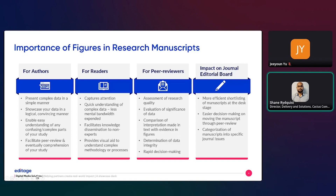For peer reviewers, figures immediately tell them about the quality of the research they are assessing. It helps them evaluate the significance of your data very quickly. It enables a comparison of interpretations made with text against the evidence shown in figures. It helps them determine data integrity and make rapid decisions on passing the paper on to the next stage of the publication process.